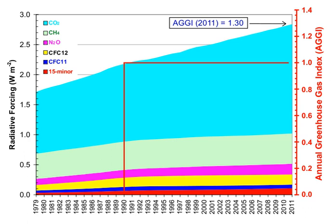Earth absorbs some of the radiant energy received from the Sun, reflects some of it as light, and reflects or radiates the rest back to space as heat. Earth's surface temperature depends on this balance between incoming and outgoing energy. If this energy balance is shifted, Earth's surface becomes warmer or cooler, leading to a variety of changes in global climate. A number of natural and man-made mechanisms can affect the global energy balance and force changes in Earth's climate.